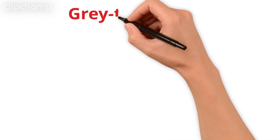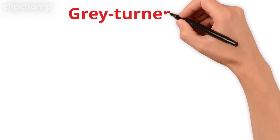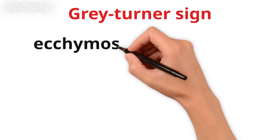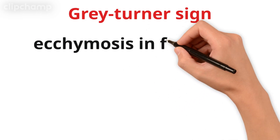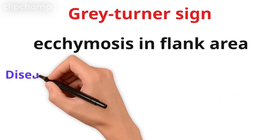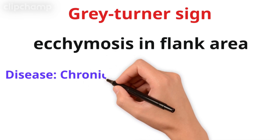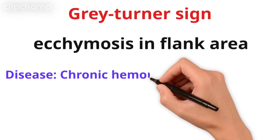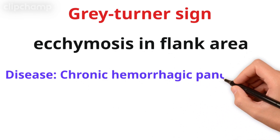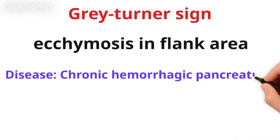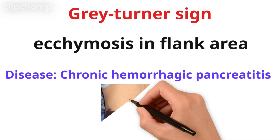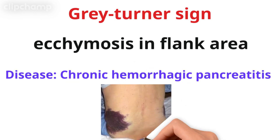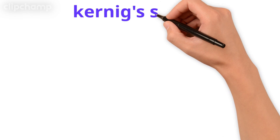Next is Grey Turner's sign. Grey Turner's sign is actually ecchymosis in the flank area. It is the pathognomonic sign of hemorrhagic pancreatitis. Here you can see this sign — you often see it on Instagram or other sites.